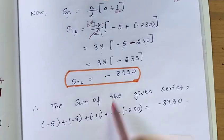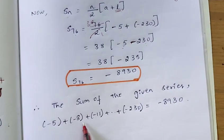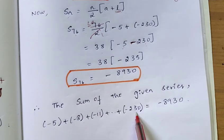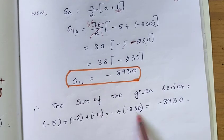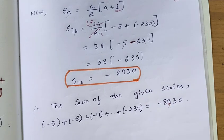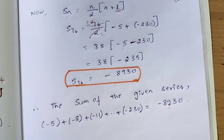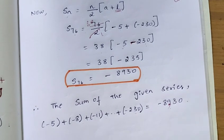Therefore, the sum of the given series -5 plus -8 plus -11 so on up to -230, which has 76 terms, is equal to -8930. This is a straightforward problem — just apply the formula carefully.